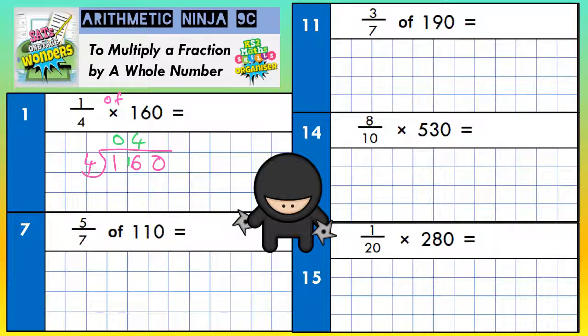And 4s into 0 won't go at all. So our final answer: a quarter of 160 is 40.